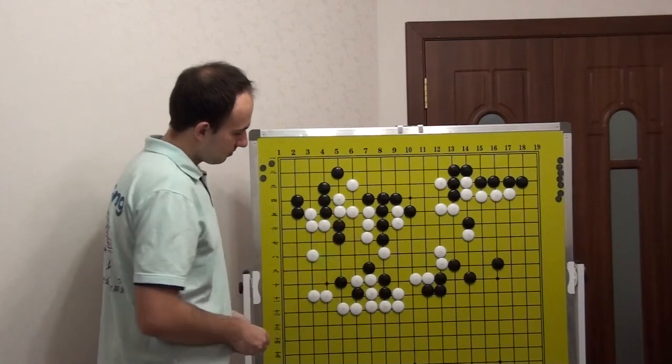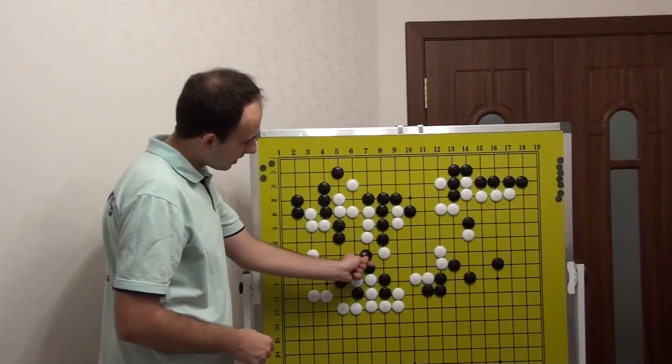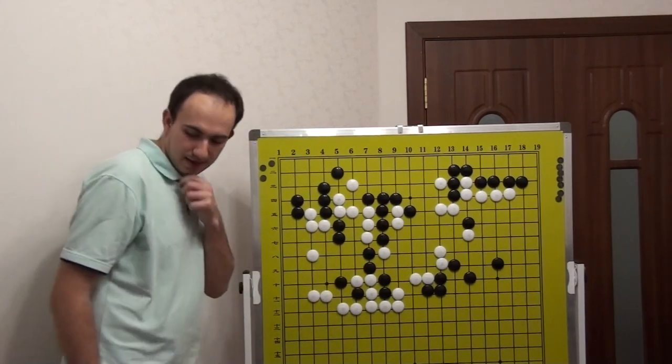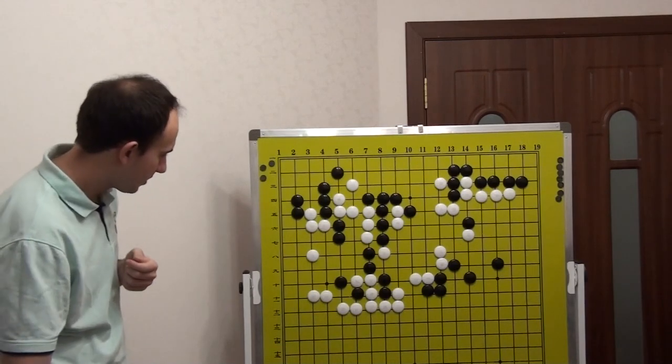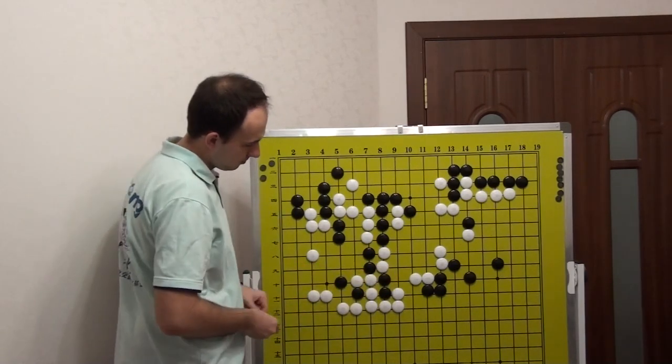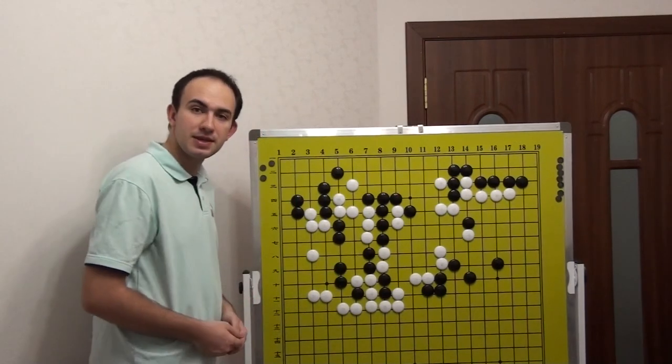Now, if White connects, Black can even play here. After this move, Black can play something like this.